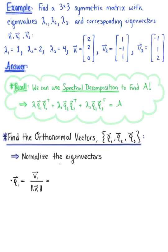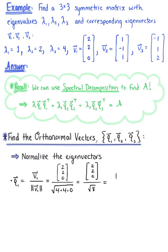The eigenvector v sub 1 has components 2, 2, 0, and we divide by its length: the square root of 2 squared plus 2 squared plus 0 squared, giving us the square root of 8. This simplifies to the scalar multiple 1 over 2 root 2, multiplied by the vector with components 2, 2, 0, leaving us with q sub 1 equal to the vector with components 1 over root 2, 1 over root 2, 0.